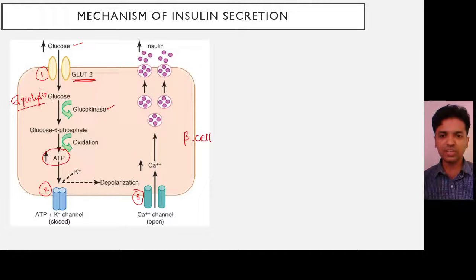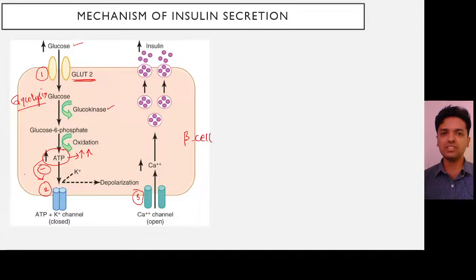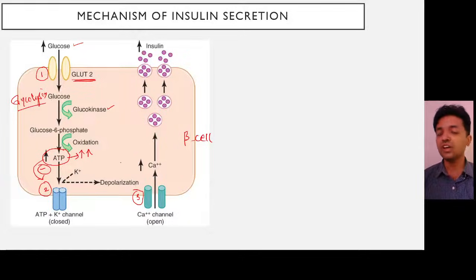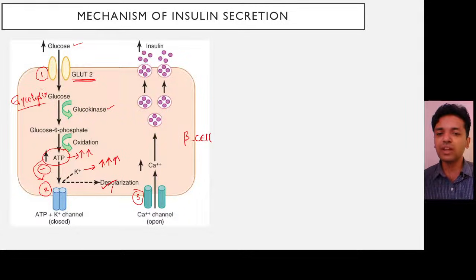Once glucose enters the cell, the concentration of ATP inside the cell increases. This ATP blocks the ATP-sensitive potassium channel. When the channel is blocked, there is no potassium efflux, so potassium can no longer leave the cell. The concentration of potassium inside the cell rises, and potassium being a positive ion leads to depolarization of the cell.